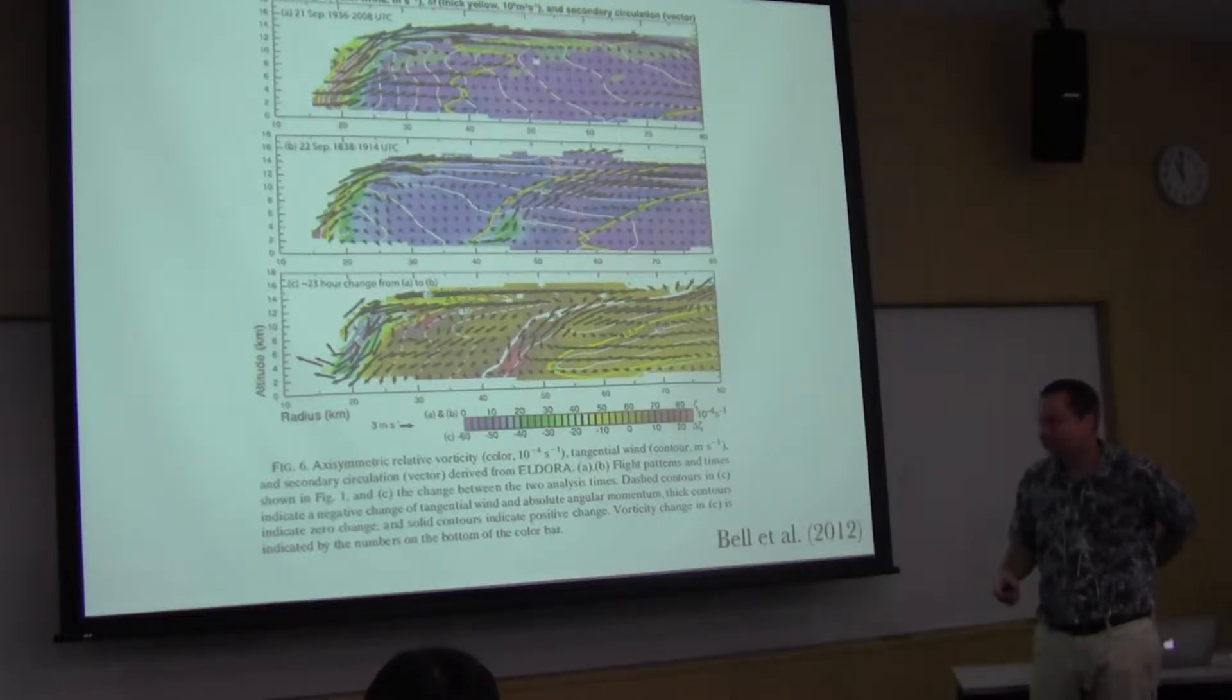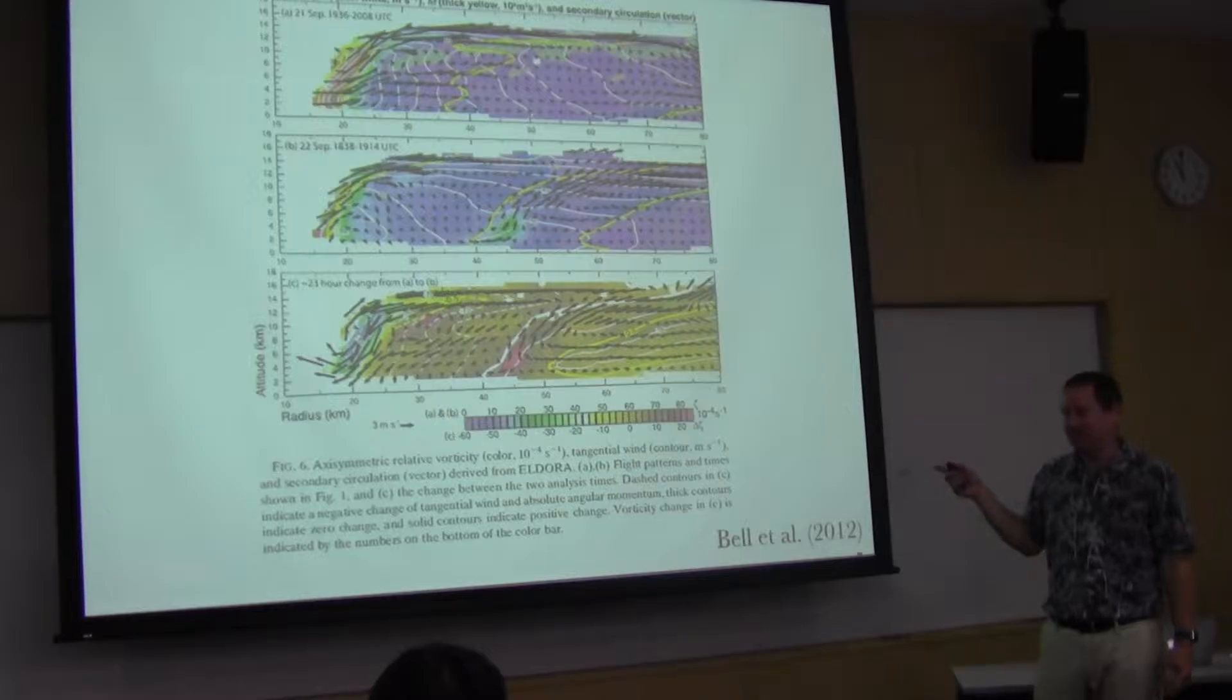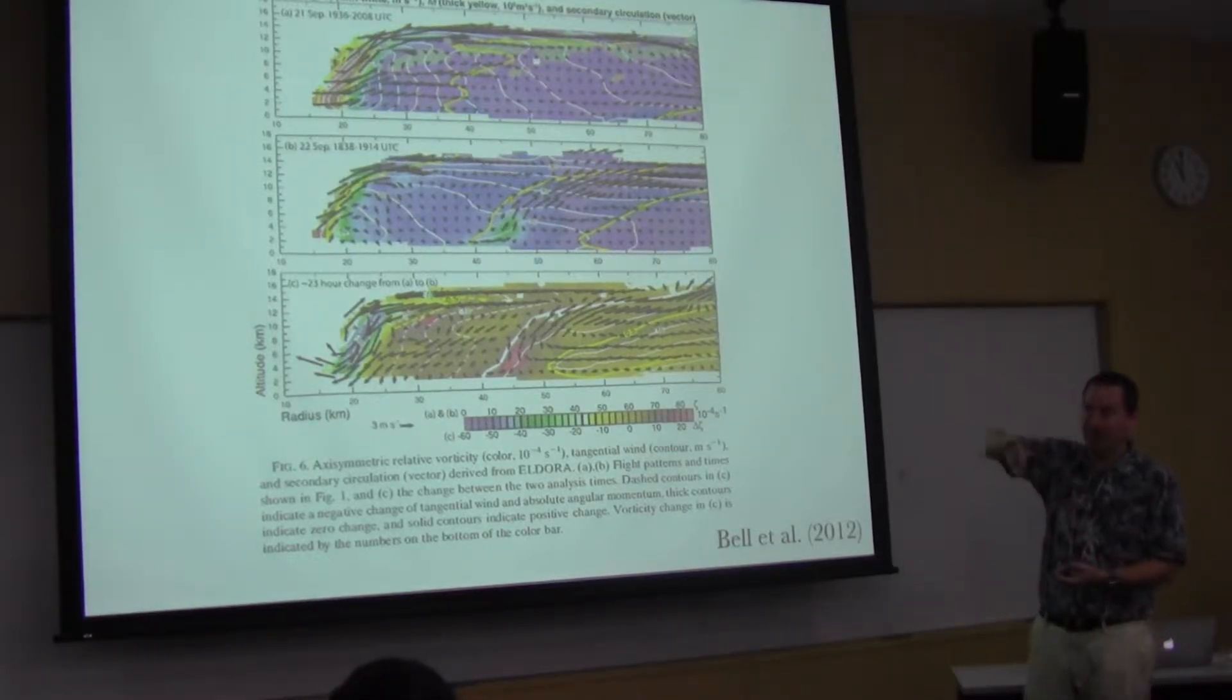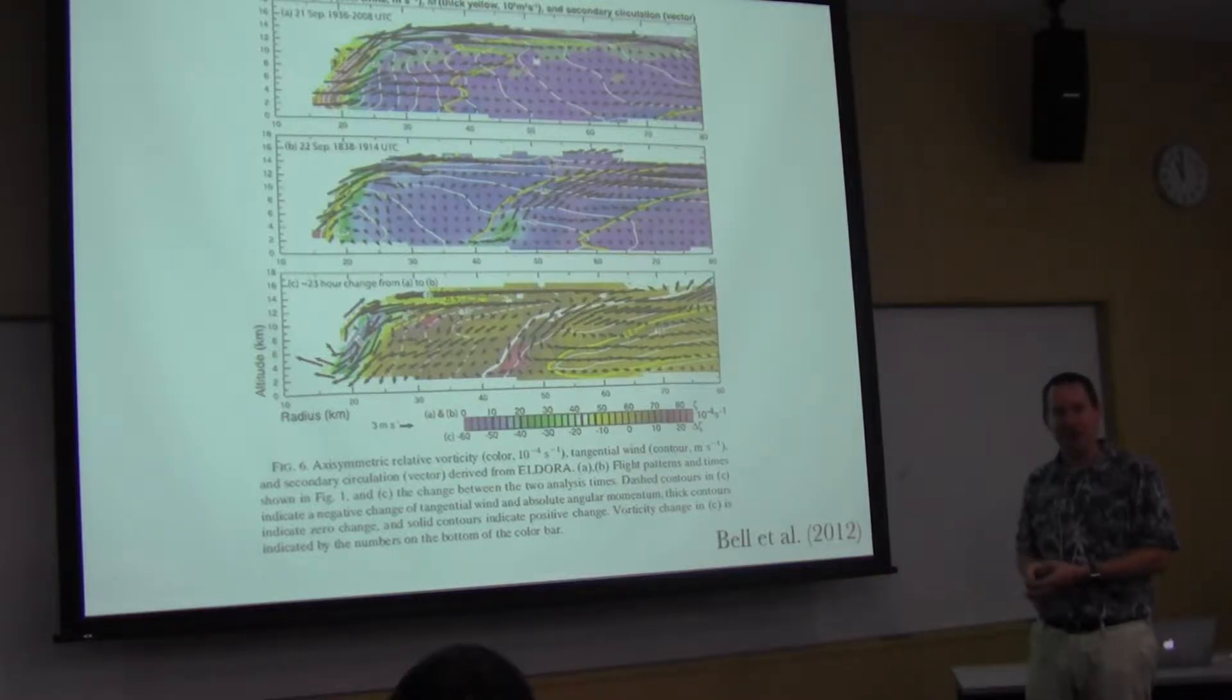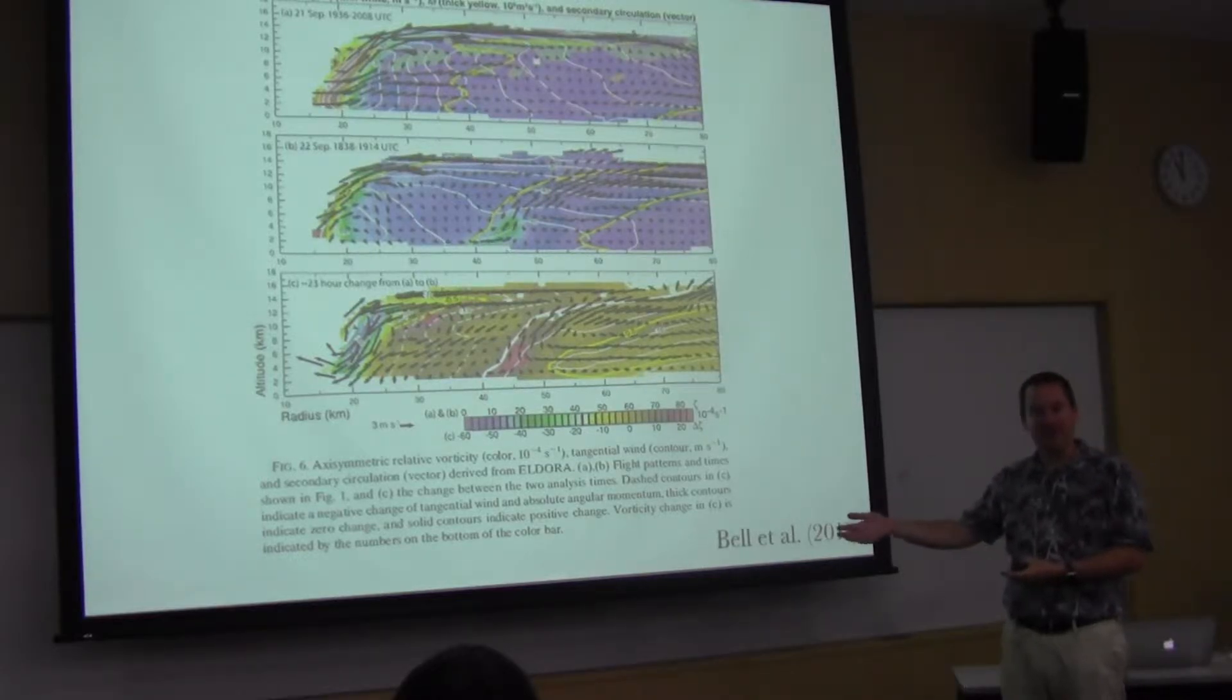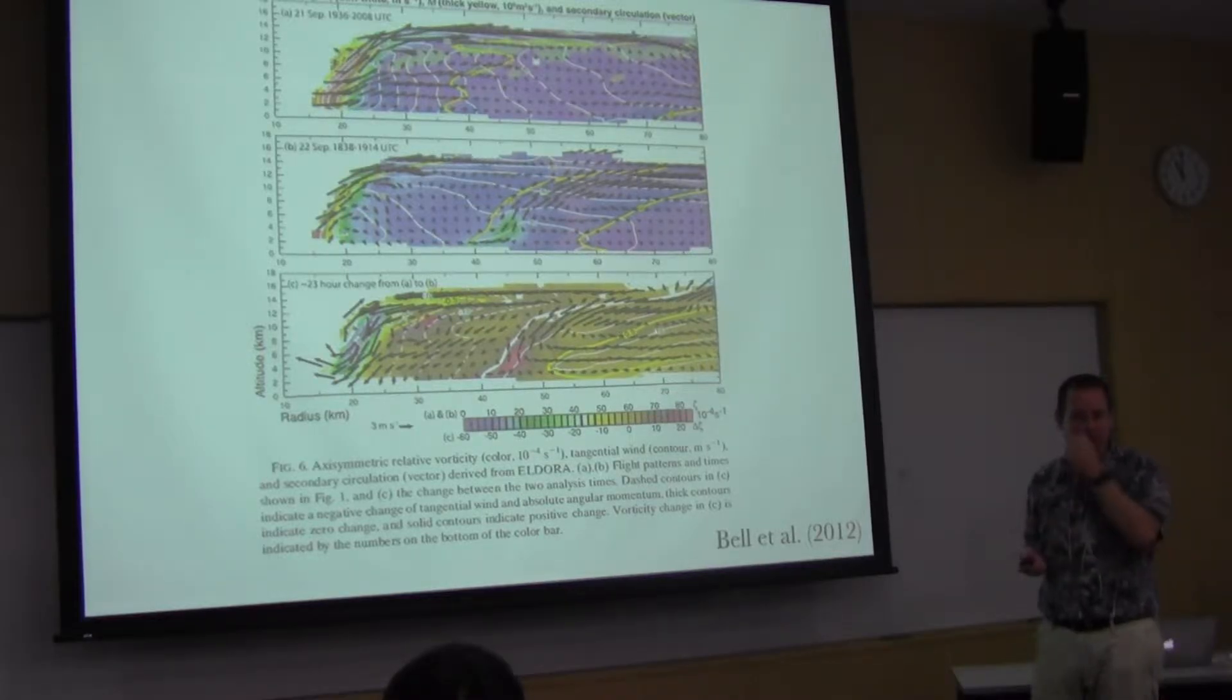Certainly an interesting question. In fact, one last point about that - Patricia, there may be something like that going on too. I mentioned Patricia has that incredible rapid intensification rate, but it also has an incredible weakening rate. We don't know exactly what happened with that weakening rate, whether that's barotropic instability or vertical shear. Some of it was due to land interaction, but I don't know exactly what happened with Patricia either.